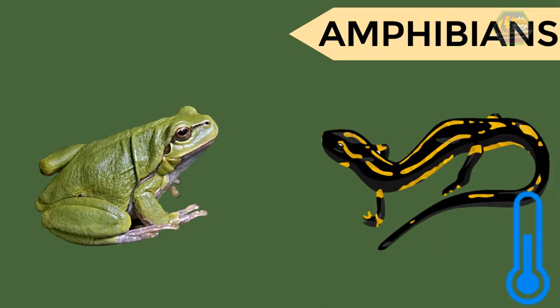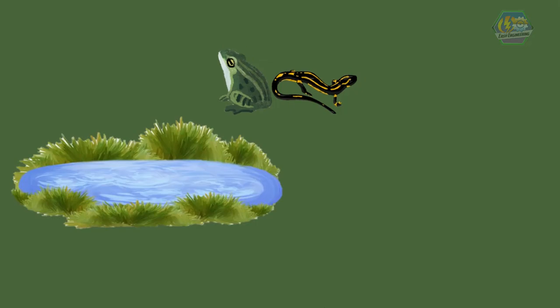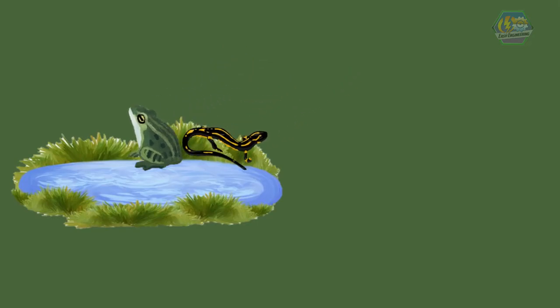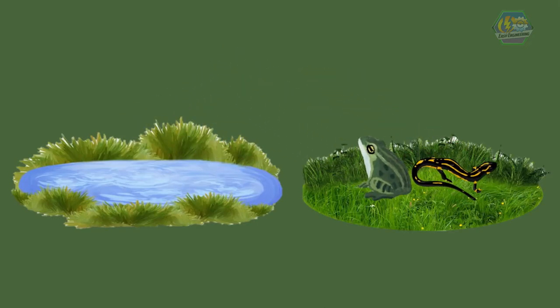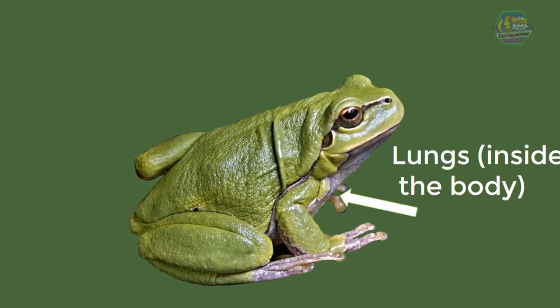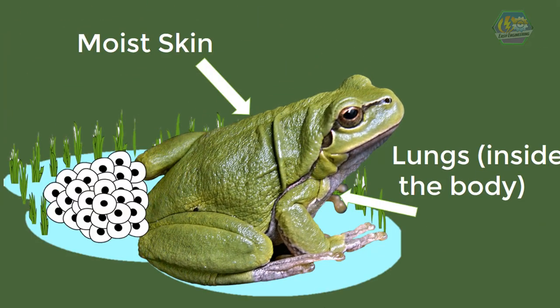The second type are the amphibians — these are frogs and salamanders. They are also cold-blooded animals. What's amazing is that they can live both on land and in water. They breathe through both lungs and moist skin, and they reproduce only in water by laying lots of eggs.